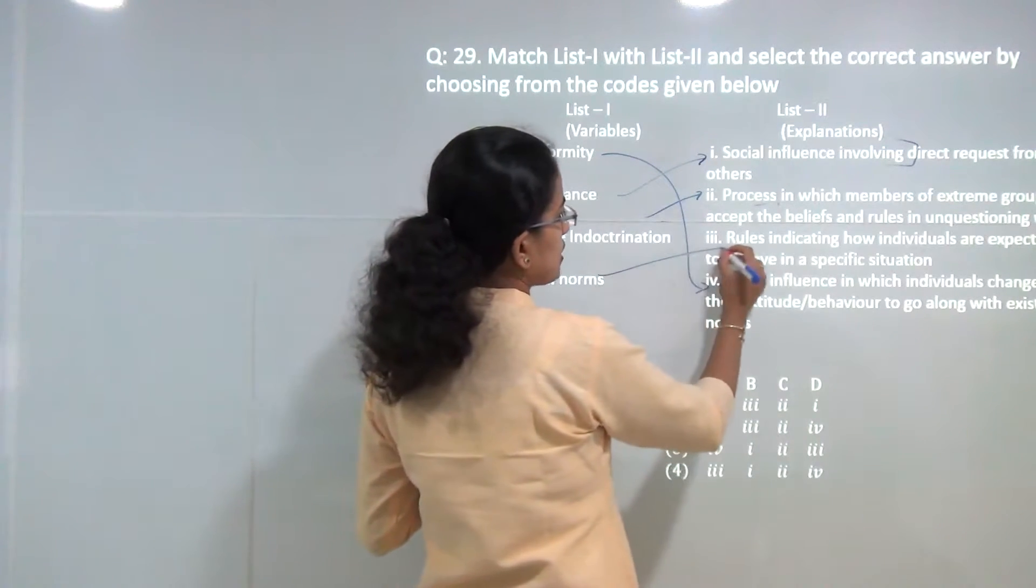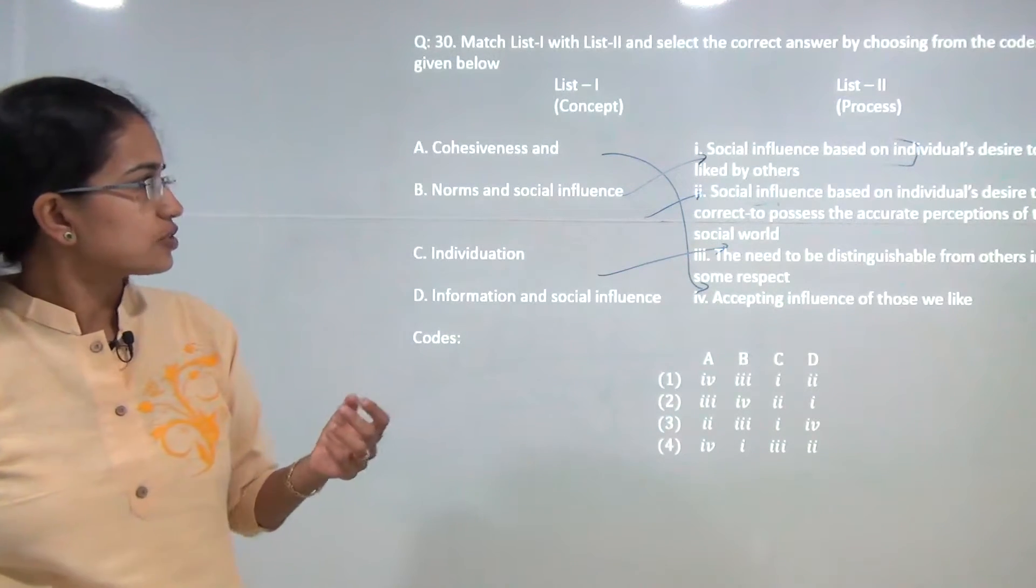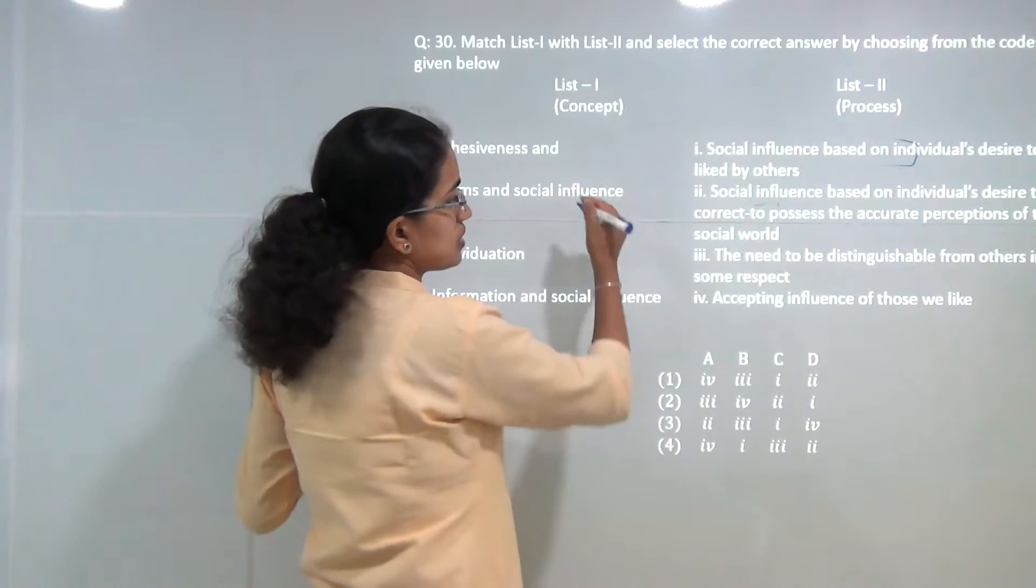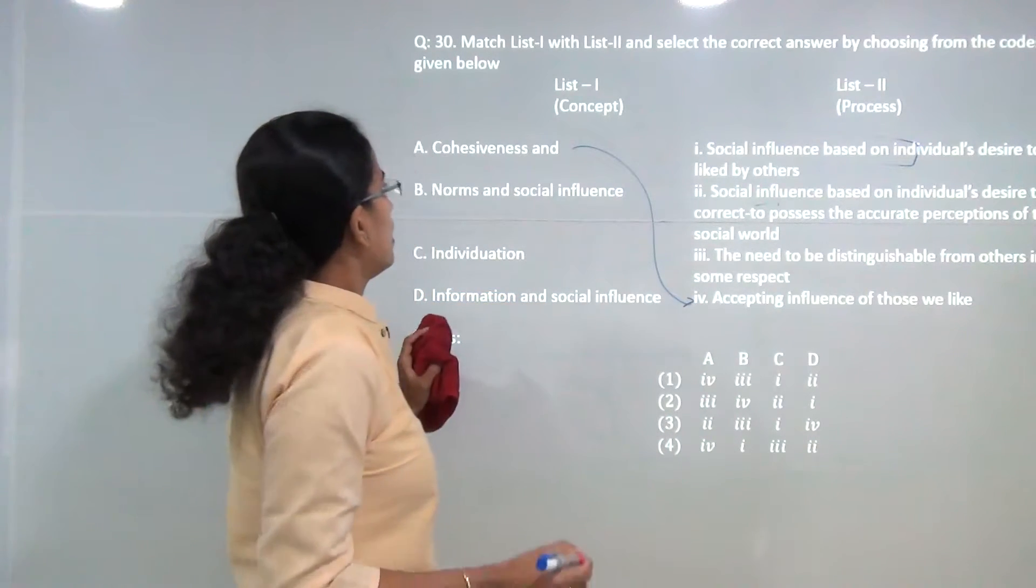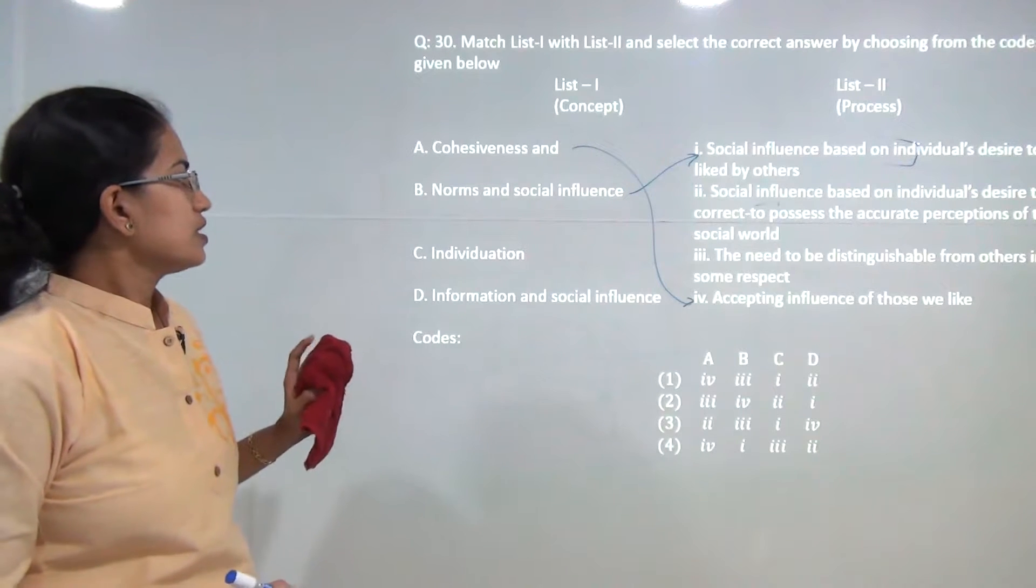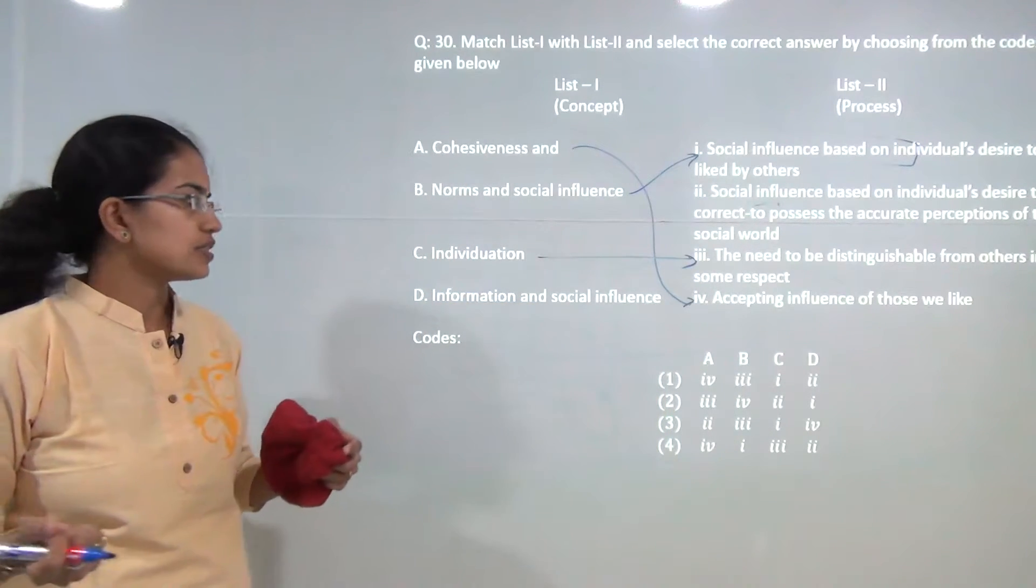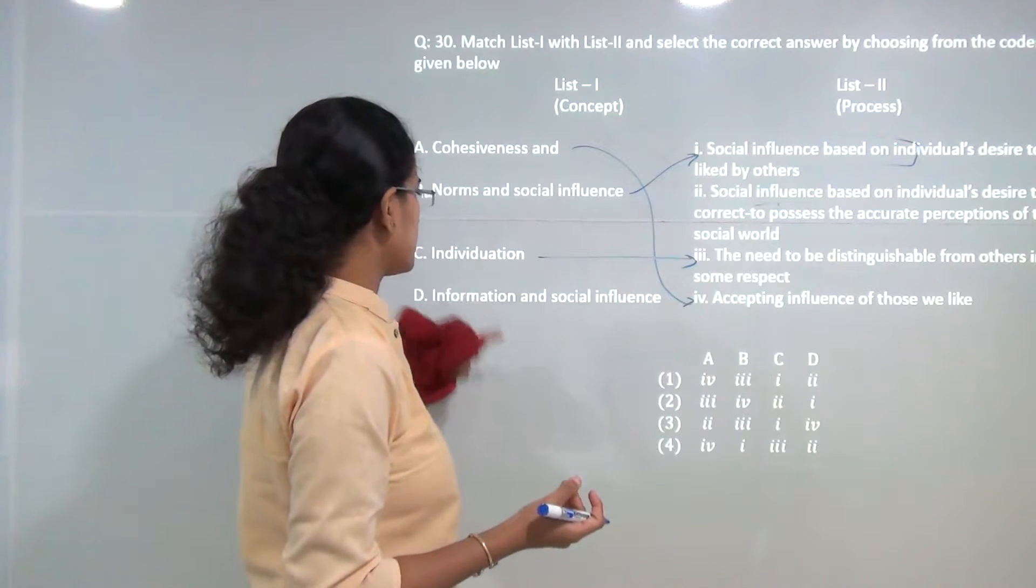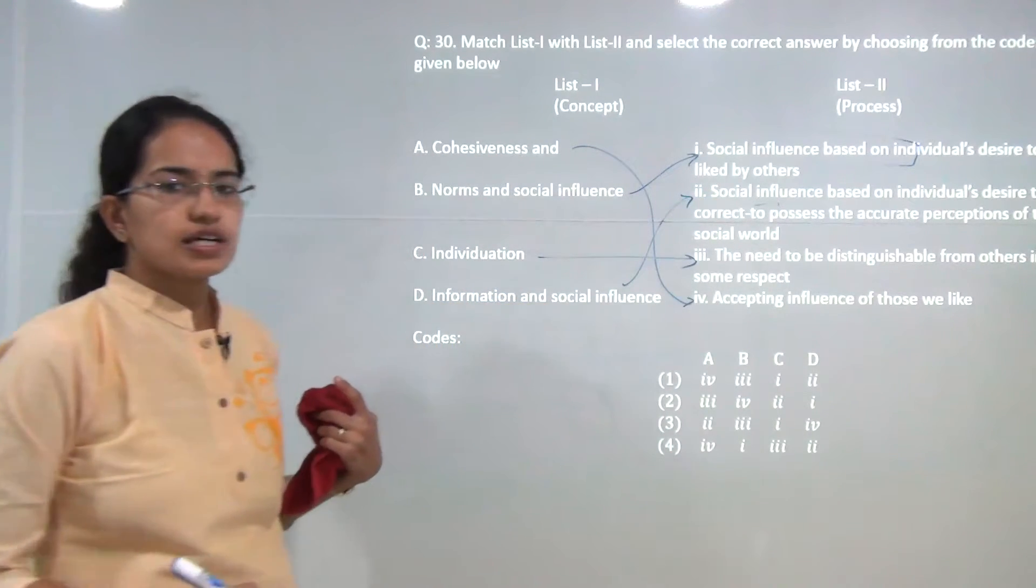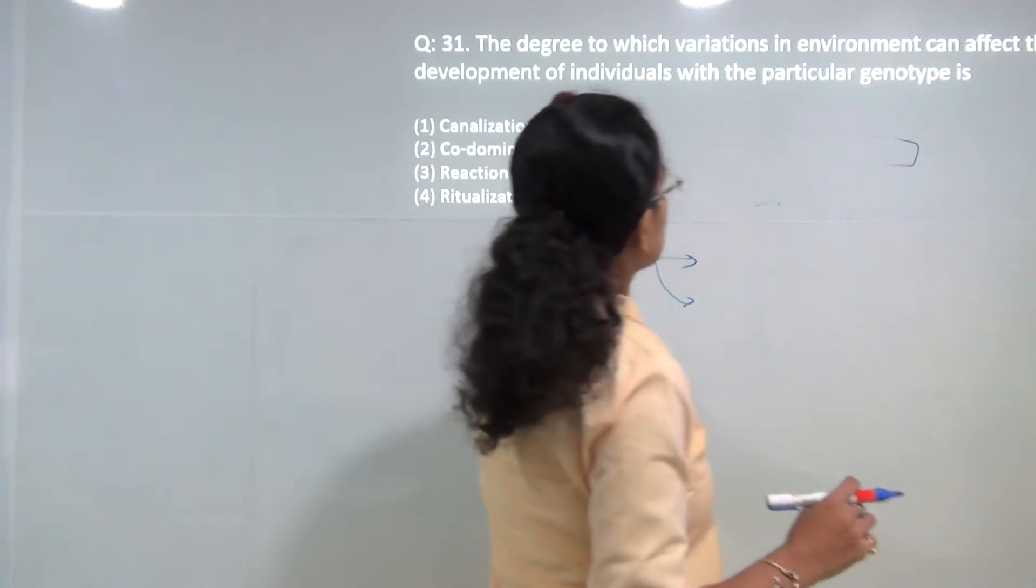Next is social norms: those are the rules that indicate how an individual is expected to behave in a certain situation. Cohesiveness and conformity talks about accepting influences of those we like. Normative social influence is social influence based on individuals' desire to be liked by others. Individualization is the need to distinguish oneself from others to create oneself as unique. Then information and social influence is social influence based on individuals' desire to be correct.